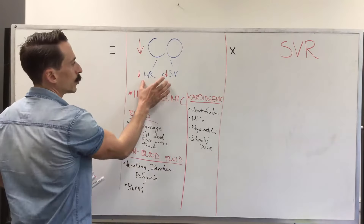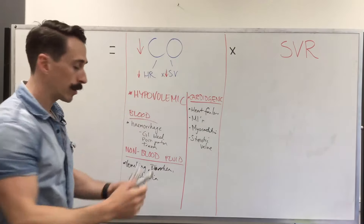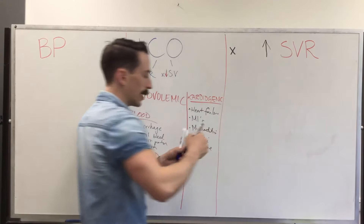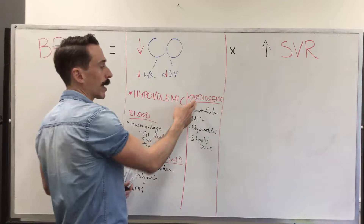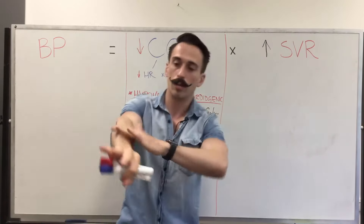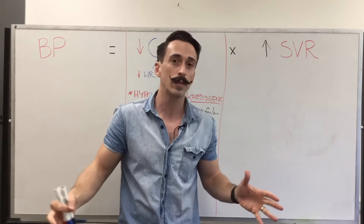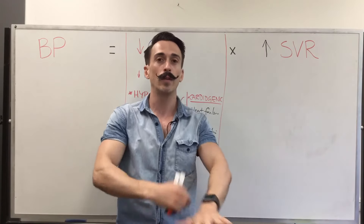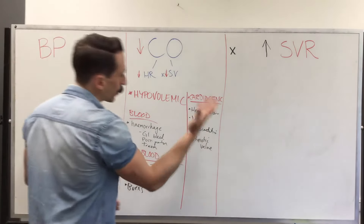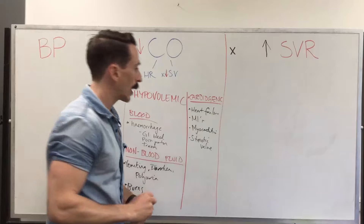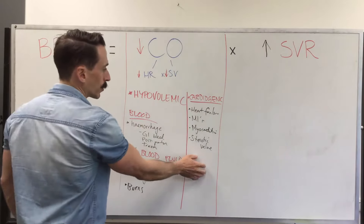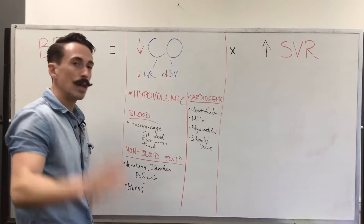For compensation in cardiogenic shock — since cardiac output has dropped — the body plays with systemic vascular resistance. Blood vessels constrict predominantly to the periphery, so the arms and legs. The individual can feel cold and the limbs can feel cold as a manifestation. To treat this, you need to fix the underlying issue with the heart, and there could be a multitude of approaches.